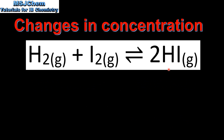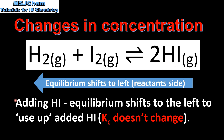Next we'll have a look at the effect of adding hydrogen iodide to the system at equilibrium. By adding hydrogen iodide, the equilibrium will shift to the left to use up the added hydrogen iodide. And once again, by making changes in concentration, the value of Kc doesn't change.